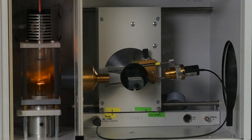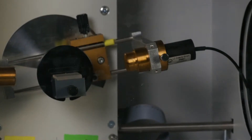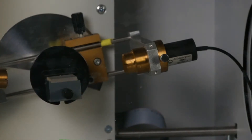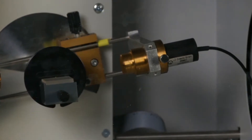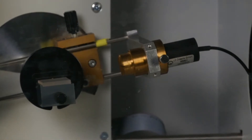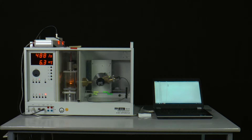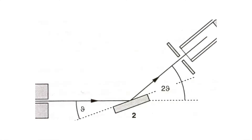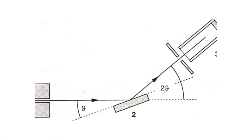In the x-ray tube, free electrons are generated at the cathode. The electrons are accelerated and hit the inclined molybdenum anode. By decelerating them, meaning a negative acceleration, x-rays are generated there. Molybdenum has in its characteristic spectrum the k-alpha line at 17.44 kilo electron volts and the less intense k-beta line at 19.65 kilo electron volts. These two characteristic lines are used here for the measurement.